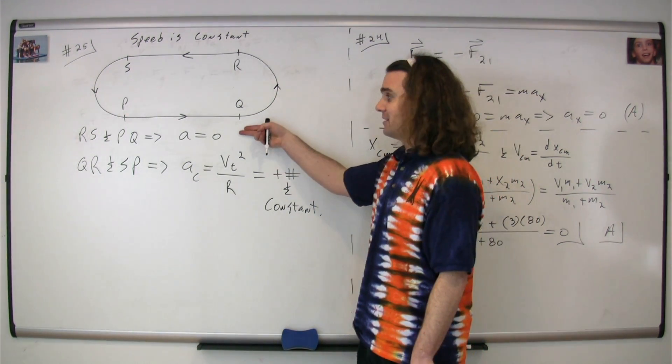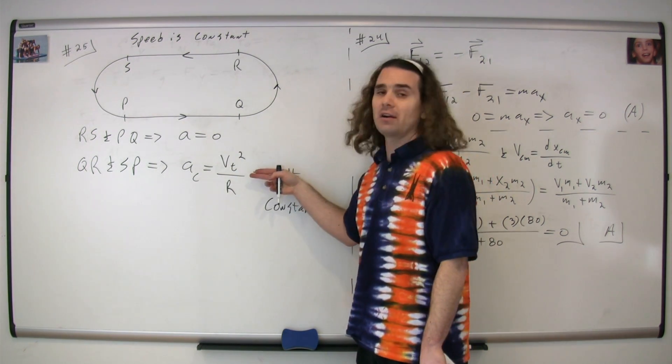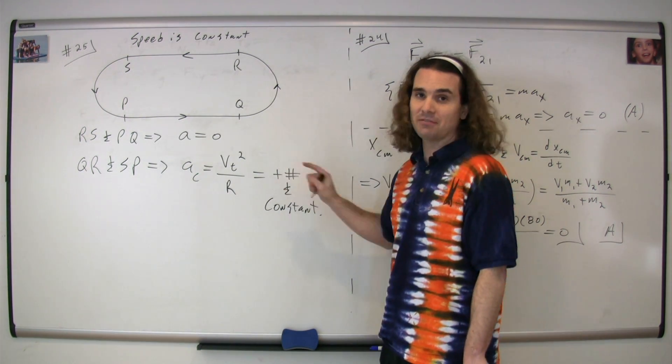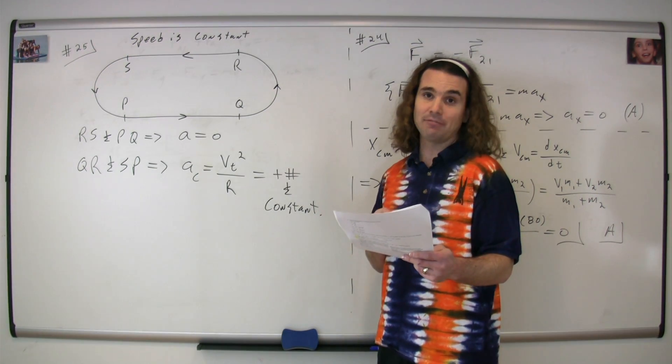So again, from r to s and p to q, the acceleration is going to be equal to zero, and from q to r and s to p, that centripetal acceleration is going to have a positive constant number. There's only one graph that fits that, and that is graph B.